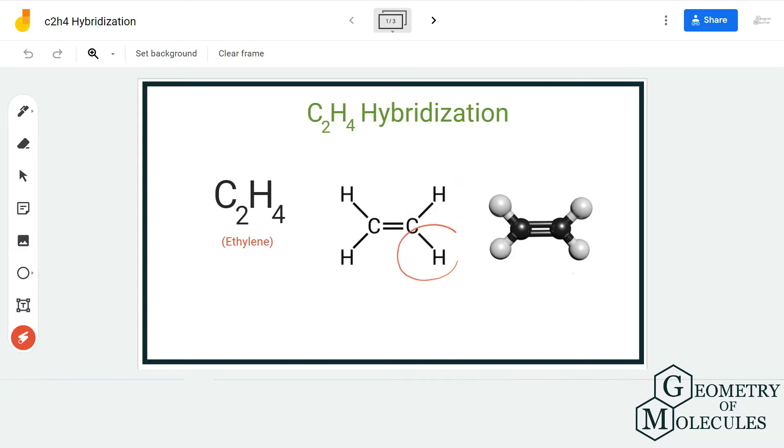To make it simpler, we are just going to consider the hybridization of this atom, as it will be similar for this carbon atom as well. If you look at the situation, it is forming three sigma bonds.